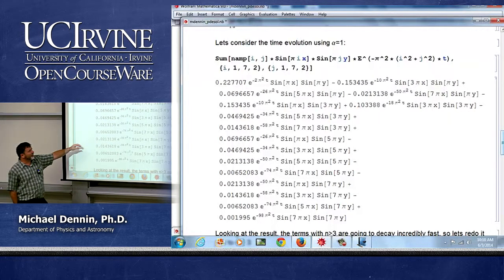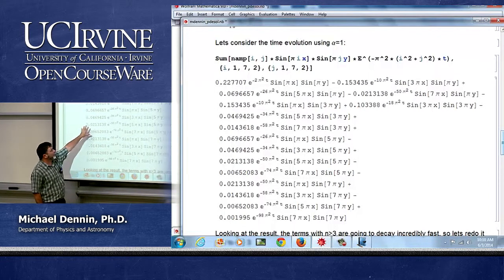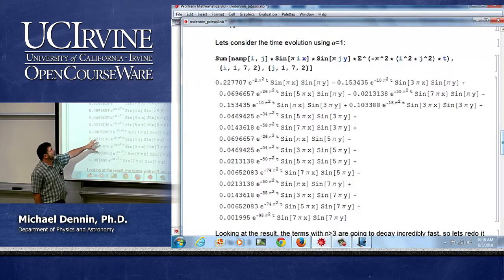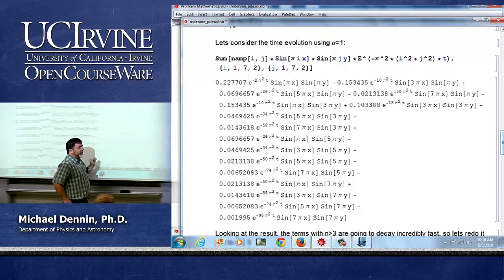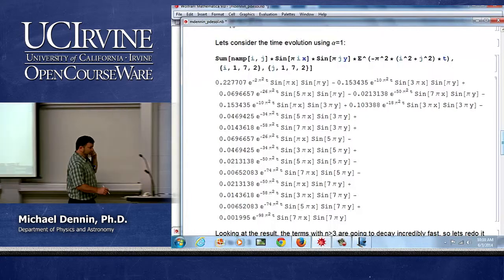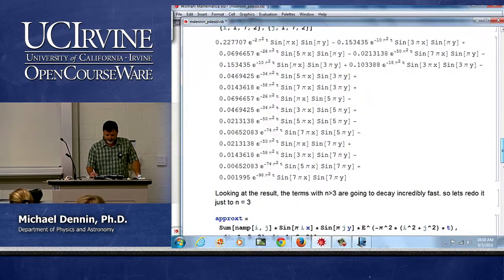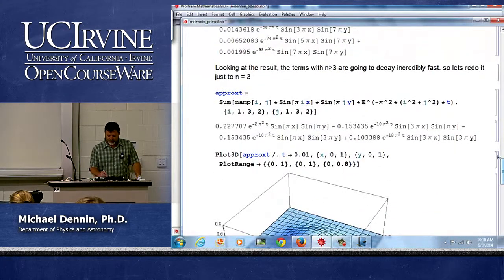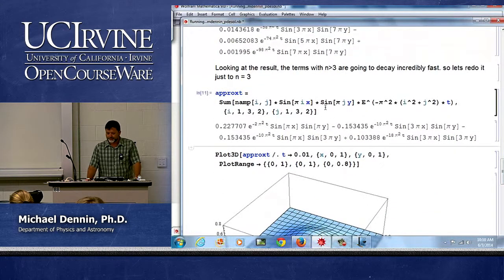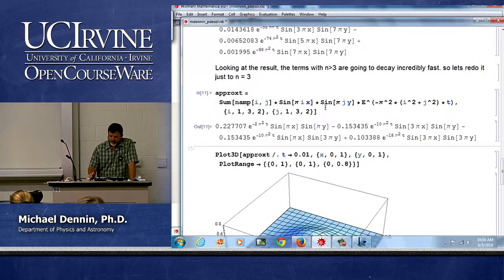Yeah, so for all of these large n's I probably don't really need to worry about them. In fact, I'll just keep n's 3 or less for my time evolution. So I'll keep n equals 1 and n equals 3.